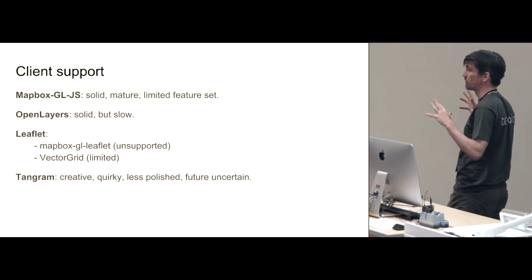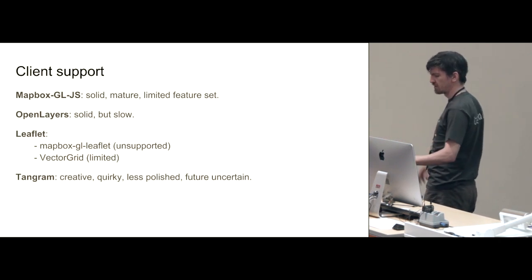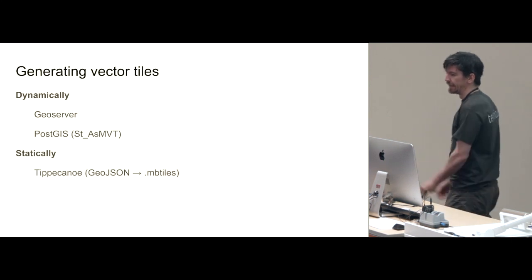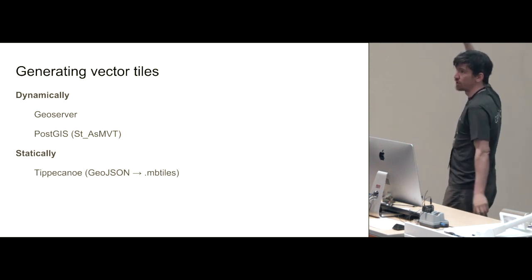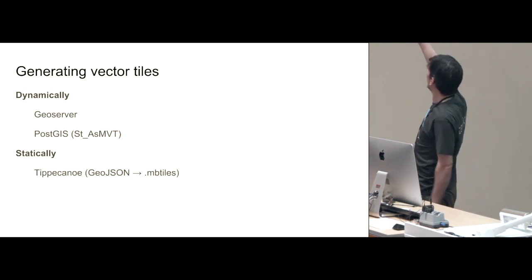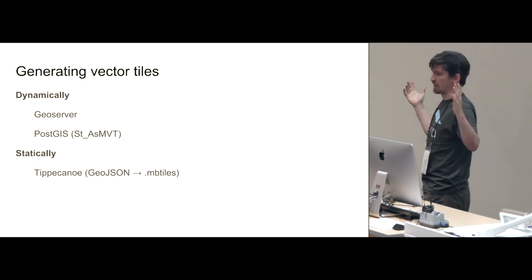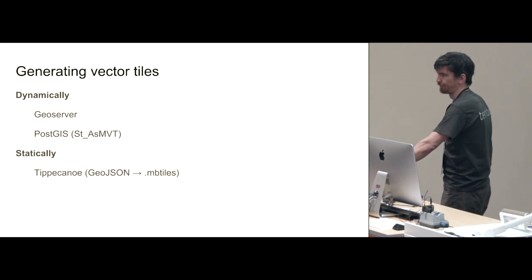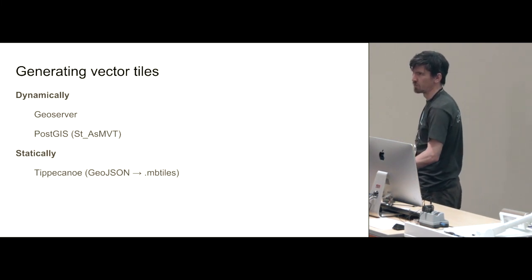Or am I going down the Tangram path, which is kind of amazing — it does some really quirky, super interesting things. But it's a bit less solid, and who knows what's going to happen to Tangram now that MapZen isn't around anymore. And you've got to choose how you're going to generate your vector tiles. My entire world is Tippecanoe, which generates them statically — GeoJSON in, MBtiles out.